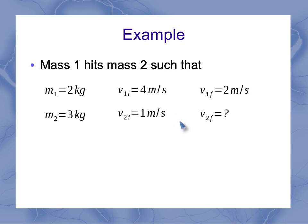After the collision, we know that mass one has a final velocity of 2 m/s. And we want to know what the final velocity of mass two is. So we have five of our unknowns, and we're solving for our last one.